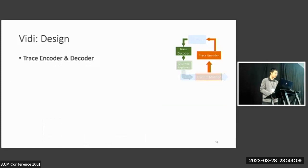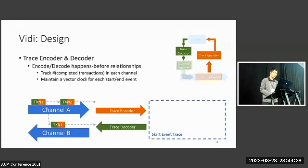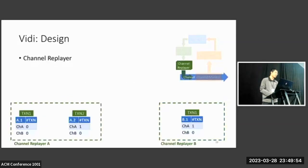And next, we have Trace Encoder and Decoder. They are responsible for managing happens-before relationships among transactions. Recall in the two-channel example we have seen earlier, Encoder and Decoder will track the number of completed transactions in each channel and maintain a vector clock for each start and end event. For example, if we only focus on the start event of these transactions, then the trace will basically say there is no transaction completed on channel A and B before transaction 1 in channel A starts. And there is only one transaction in channel A completes when the first transaction in channel B starts, so on and so forth.